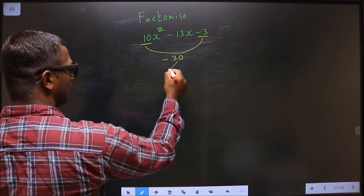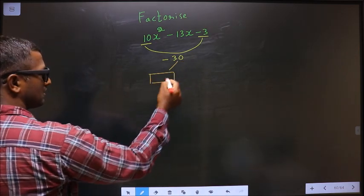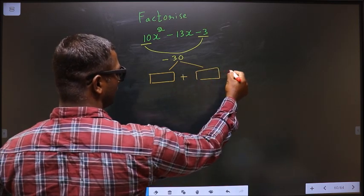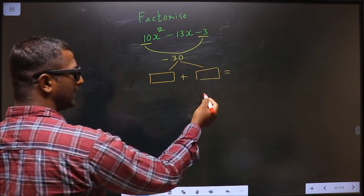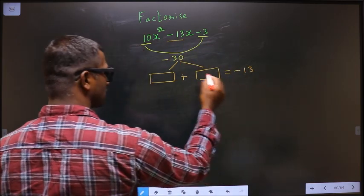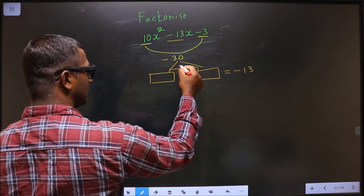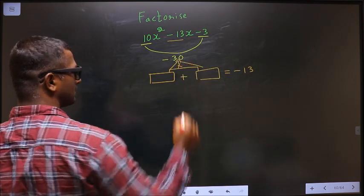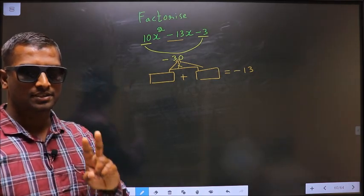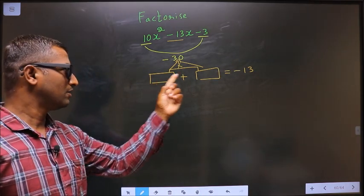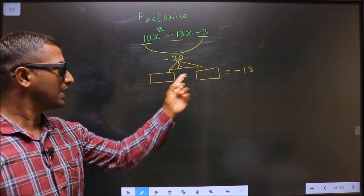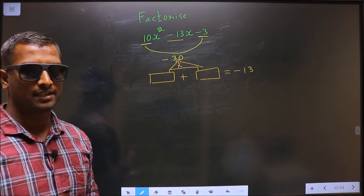Next, you should look out for 2 numbers such that when you add the 2 numbers, you should get the x coefficient, which is minus 13 here. And also, when you multiply these 2 numbers, you should get minus 30. So look for 2 numbers that add to minus 13 and multiply to minus 30.